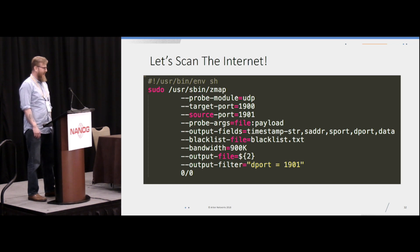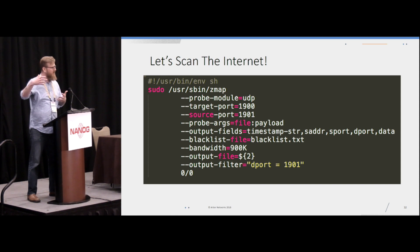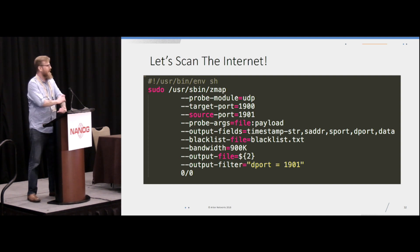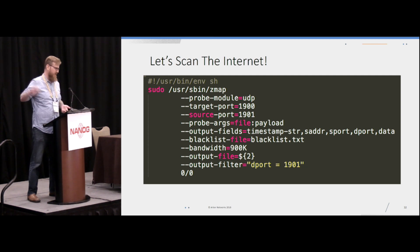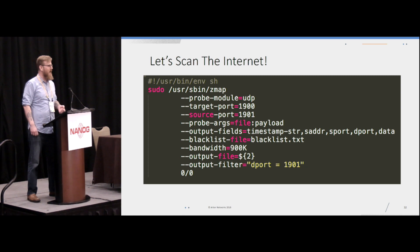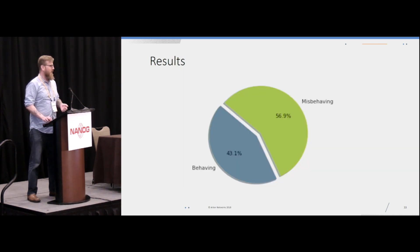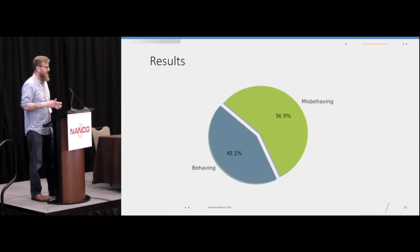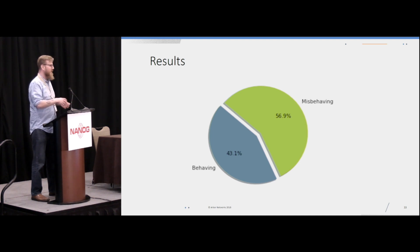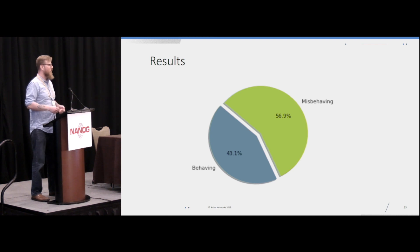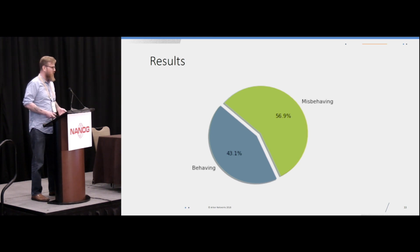We decided to figure this out by scanning the entire internet. As a proxy for a random ephemeral source port, we used a static port of 1901 — it doesn't have to be 1901, we just used one static port so we could record the responses. We sent the mSearch packet to every address on the internet and recorded the responses. Of all our responses, I divided them into two buckets: the behaving group, where responses were destined for source port 1900, and the misbehaving group, where the source port was something other than 1900. What was immediately striking is that there are far more misbehaving SSDP implementations on the internet than behaving ones.